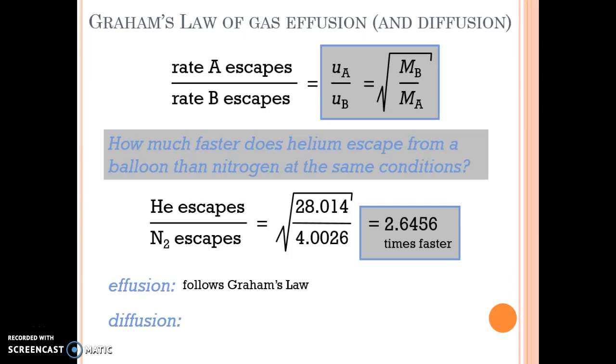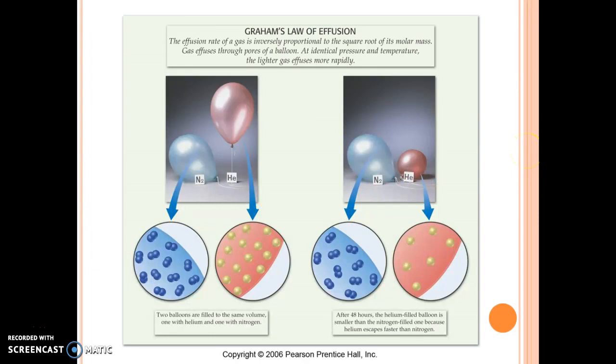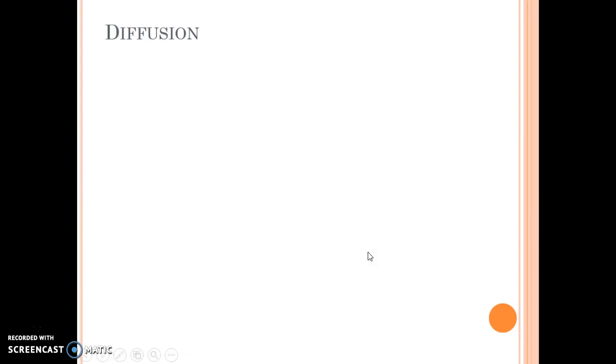For diffusion, the mixing of molecules, it's not quite as straightforward as Graham's Law shows. Graham's Law of Effusion—here's the example I was talking about—helium gas effuses much faster than nitrogen gas. But now let's take a look at diffusion.